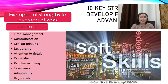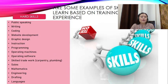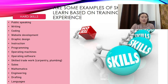We have 10 key strengths to develop for career advancement. Examples of soft skills to leverage at work include: time management, communication, critical thinking, leadership, attention to detail, creativity, problem solving, teamwork, adaptability, and organization. We also have examples of hard skills you can learn based on training and life experience, including: public speaking, writing, coding, website development, graphic design, instruction, programming, operating machines, operating software, skilled trade work, carpentry and plumbing, sales, mathematics, engineering, drafting, and languages.